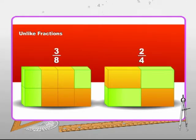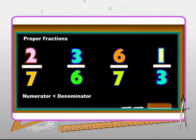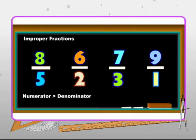Three by eight and two by four are unlike fractions because they have eight and four as their denominators. Fractions whose numerators are less than the value of their denominators are called proper fractions. The value of proper fractions is less than one. As you can see in two by seven, numerator two is less than seven, so it's a proper fraction. Fractions whose numerators are greater than the value of their denominators are called improper fractions. The value of an improper fraction is greater than one. Eight by five is an improper fraction, having eight as the numerator which is greater than the denominator.